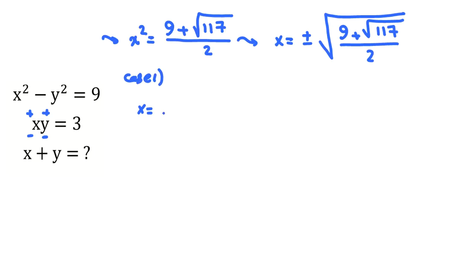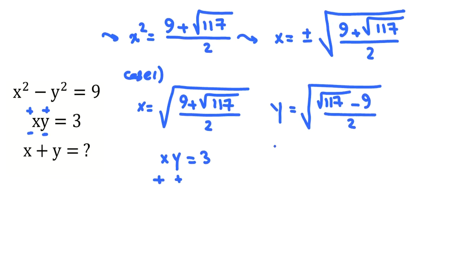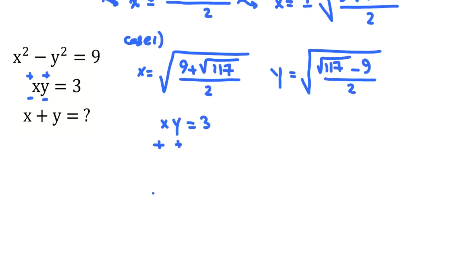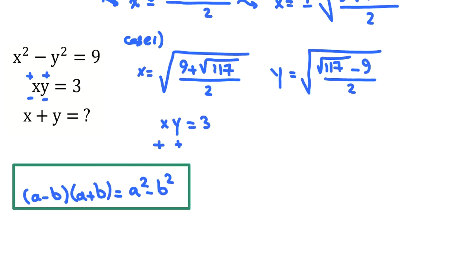Case 1. If x is 9 plus root 117 over 2. And we can say xy is 3. x is positive here. So y should be also positive. And look. I find one answer here. Because if we have a square root, if I want to get rid of that. If I write square root of 117 minus 9 over 2. If I consider this y, and I check the product, I will see it will be 3. Why? I use this equation. A minus b times a plus b equals a squared minus b squared.